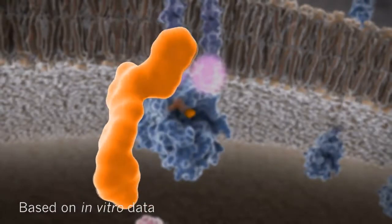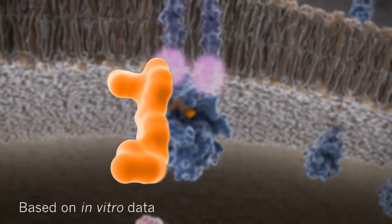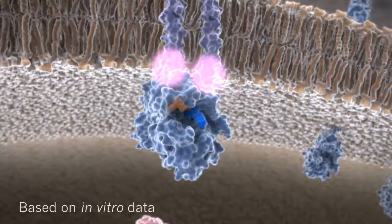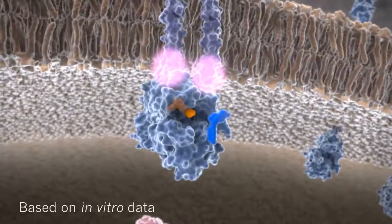The imatinib mechanism of action observed in vitro suggests that its continual presence may be important for preventing KIT-positive GIST cell proliferation.